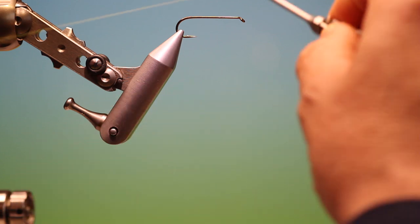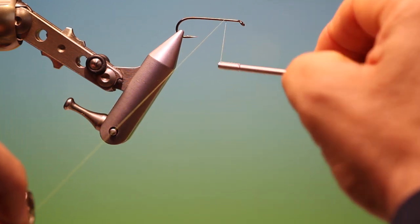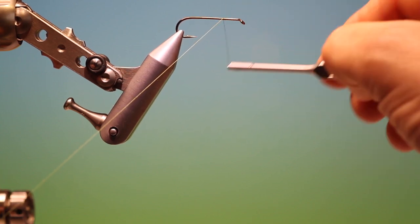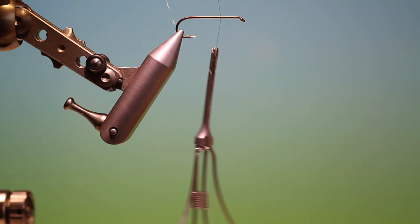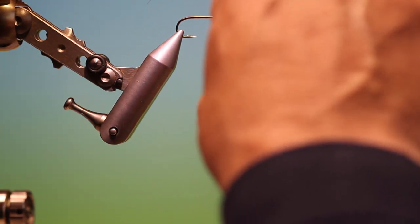First we have to make a dubbing loop. We'll just attach our tying thread to the hook shank.